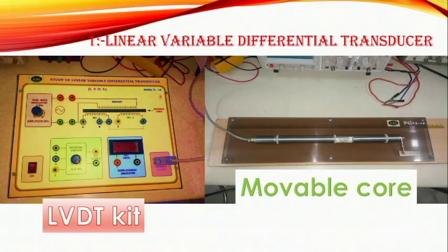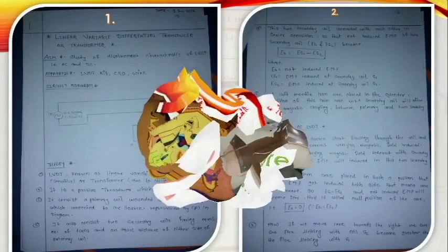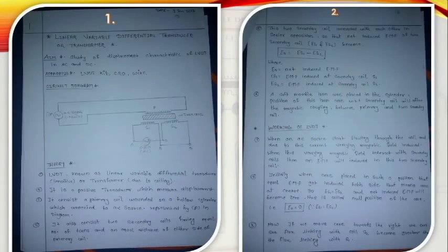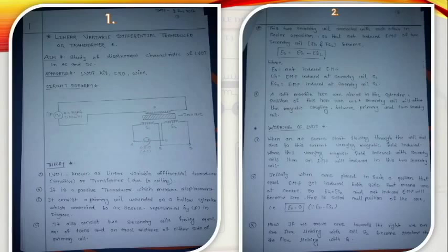Now let's see the aim, apparatus, and theory of this experiment. The aim is the study of displacement characteristics of LVDT in AC and DC modes. That means you have to make two observation tables and determine both AC and DC modes. The apparatus required is the LVDT kit, CRO, and wire.